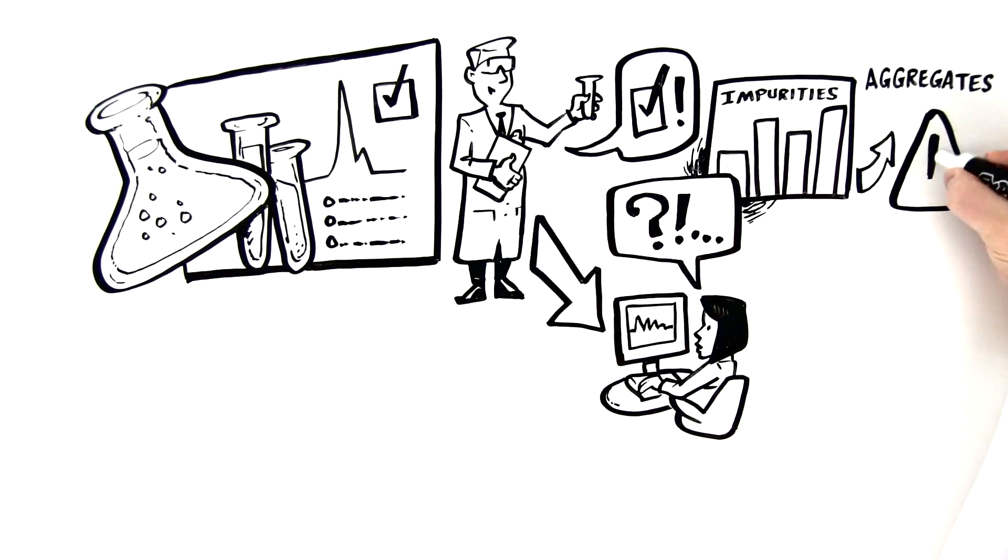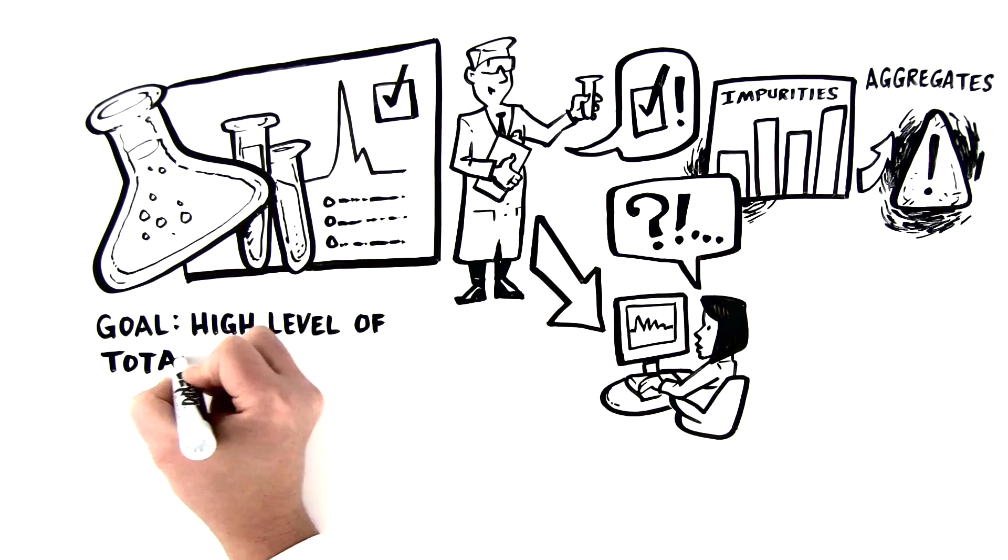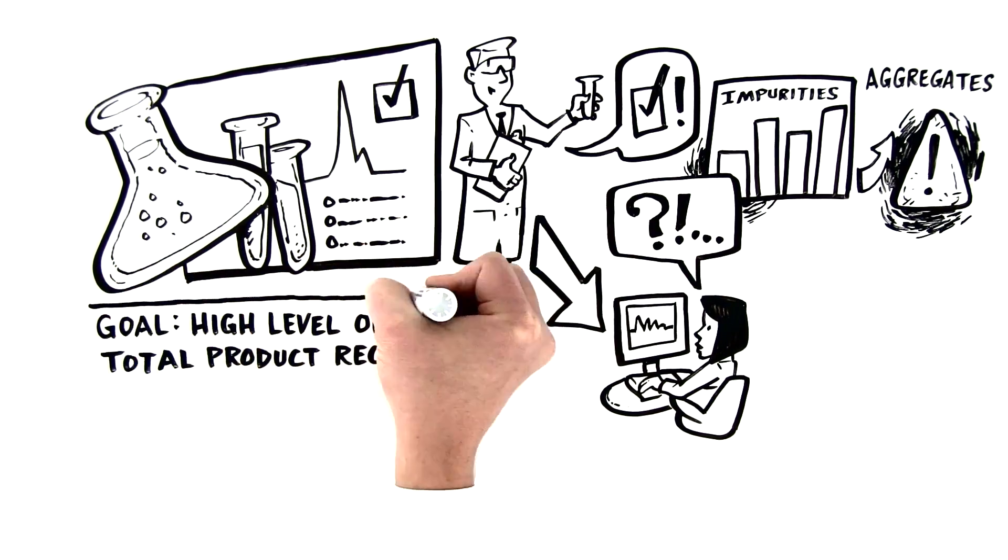High concentrations come with increased levels of product and process-related impurities. These include aggregates, which can influence biotherapeutic efficacy and immunogenicity. Faced with more aggregates, process developers strive to achieve a high level of product recovery.